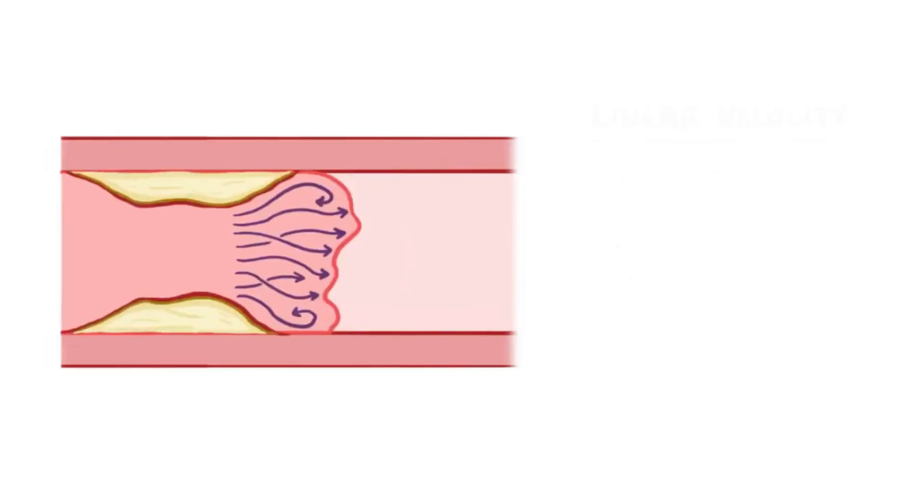Sometimes though blood flow is disrupted, like if it has to pass by a crusty old atherosclerotic plaque buildup along the wall, which ends up reducing the diameter of the blood vessel at that point and causes turbulence.